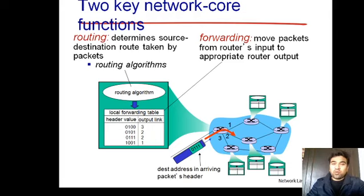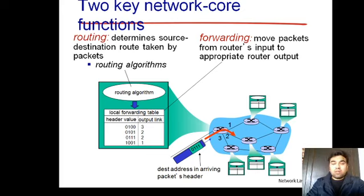Hello and welcome to this course on computer networks. Today we are going to discuss two key functions of the network core: the first one is routing and the second one is forwarding. The network core has two modes of operation — circuit switching and packet switching. The biggest example of circuit switching is PSTN, the public switched telephone network, while the biggest example of packet switching is the internet. In packet switch networks, data is sent in the form of packets.